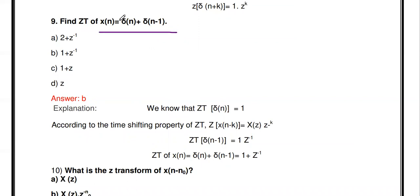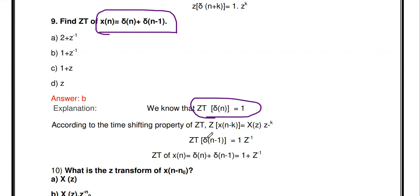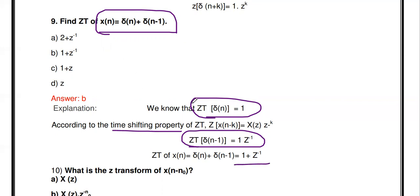Find the Z-transform of x[n] = δ[n] + δ[n-1]. This is a common university question. Using the linearity property: Z-transform of δ[n] is 1, and Z-transform of δ[n-1] is 1·z⁻¹ (by time shifting). Adding them: the answer is 1 + z⁻¹.